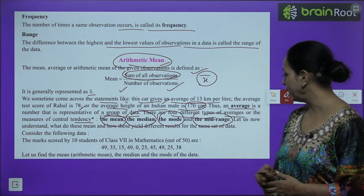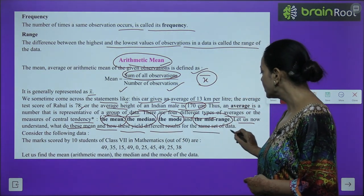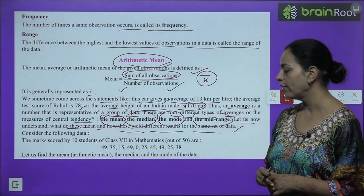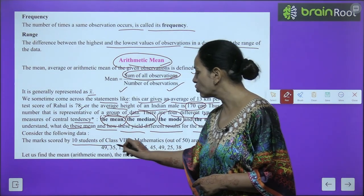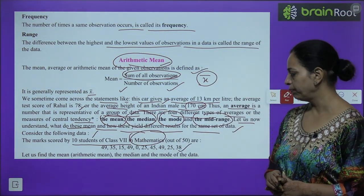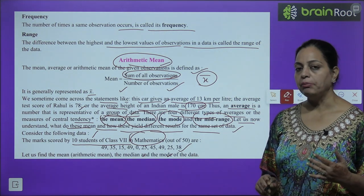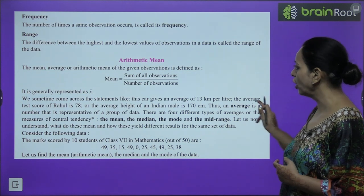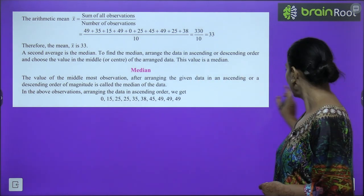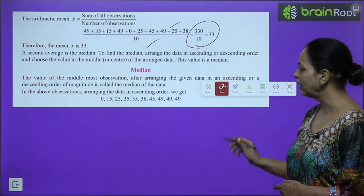Let us understand what these mean and how they yield different results for the same set of data. Consider the marks scored by 10 students of Class 7 in mathematics out of 50. Let us find the mean, median and mode. For mean: sum of all observations divided by number of observations. Adding all the marks and dividing by 10, the mean is 33.